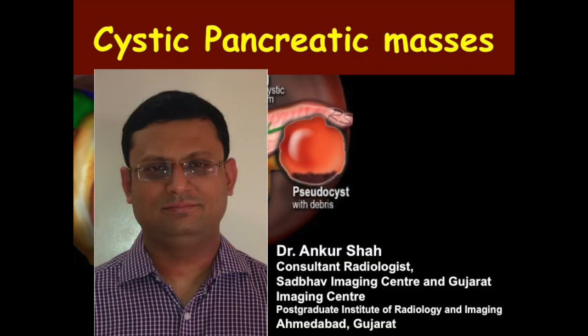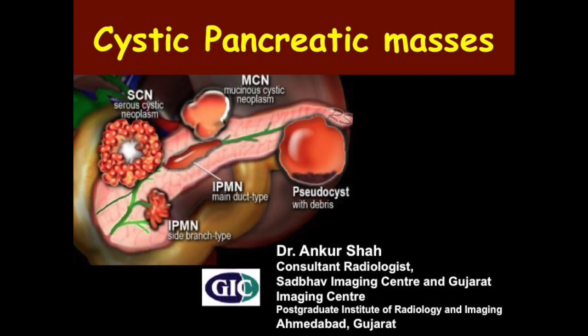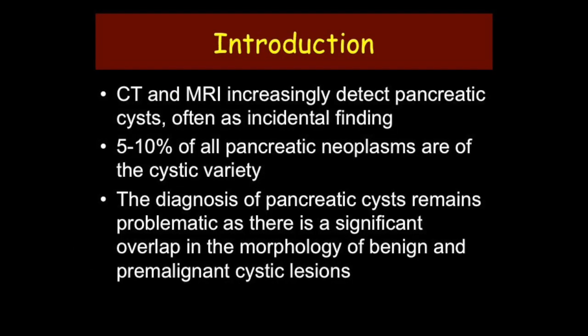I'll be discussing cystic pancreatic masses. CT and MRI increasingly detect pancreatic cysts, often as incidental findings. About 5 to 10 percent of all pancreatic neoplasms are of the cystic variety. The diagnosis remains problematic because there is significant overlap in the morphology of benign and pre-malignant lesions.